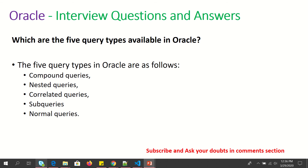Which are the five query types available in Oracle? The five query types that are available are: compounded queries, nested queries, correlated queries, sub-queries, and normal queries.